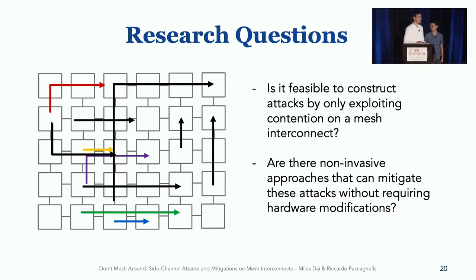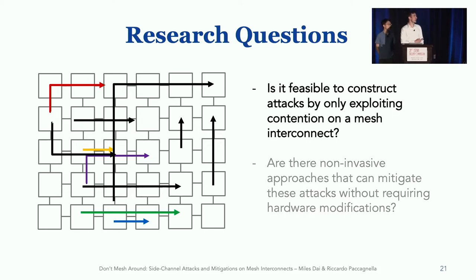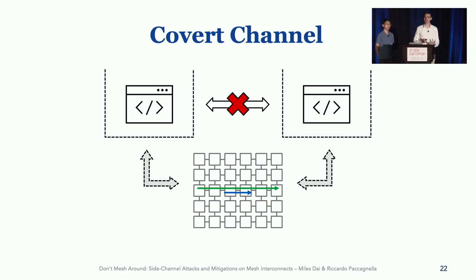Let's go back to the research questions we asked at the beginning of this presentation and look at two examples of security implications for attackers and two for defenders. The first example of a security implication for attackers is a covert channel. What we show in the paper is that the mesh interconnect can be used to establish a very reliable communication channel between two processes, even when these two processes are isolated in the cores and in the caches.